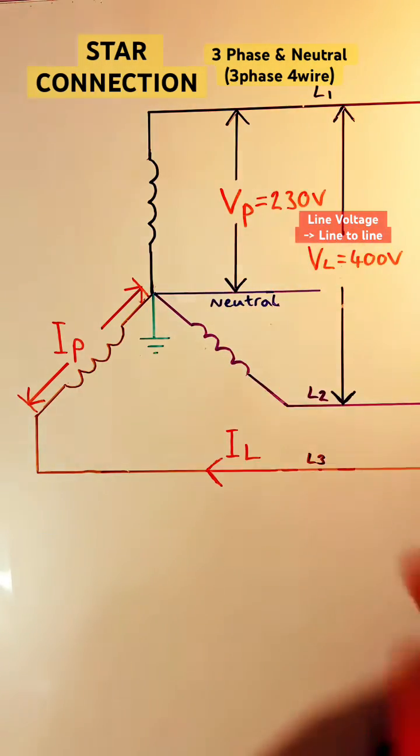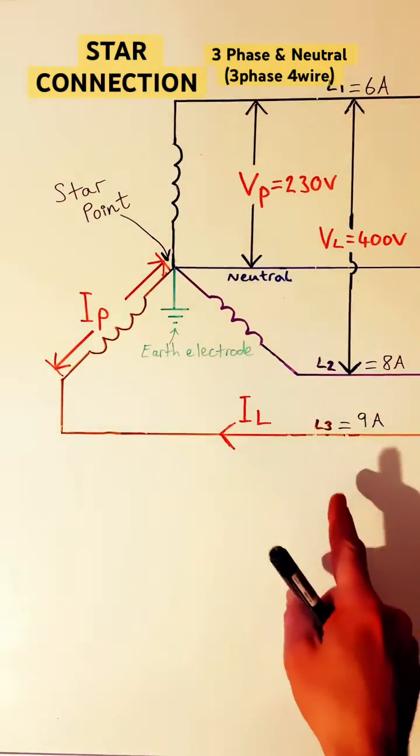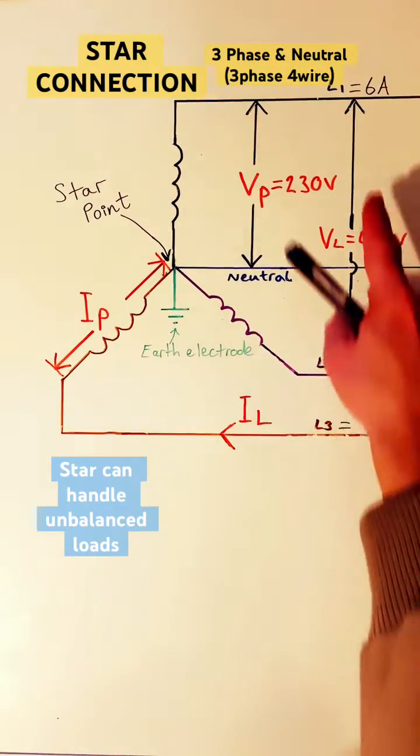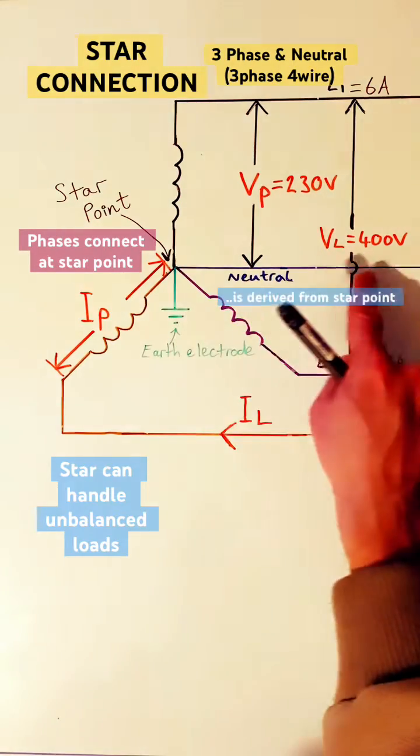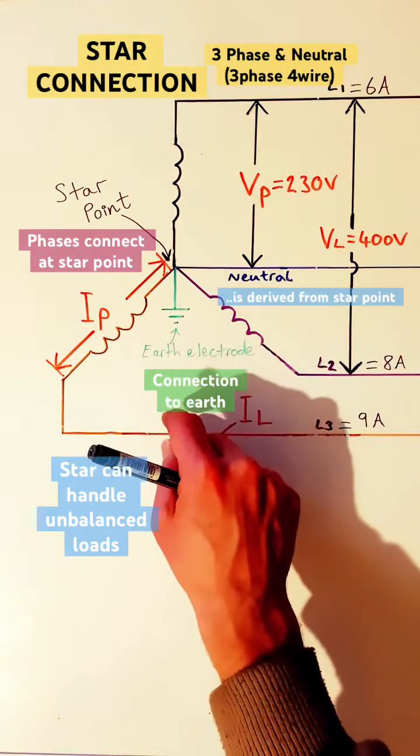Now we can have a balanced load when we connect in star, but we tend to use that star connection when we have an unbalanced load. Each of the three loops is connected to the star point. The neutral is derived from the star point and a connection to earth is made.